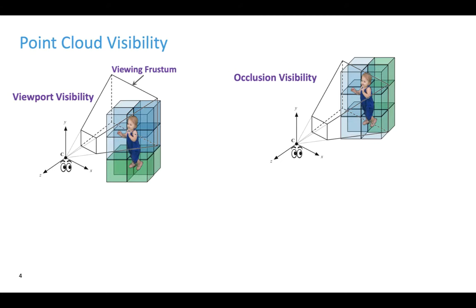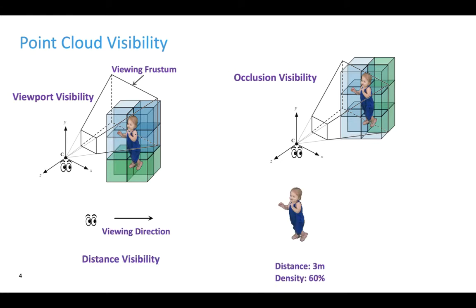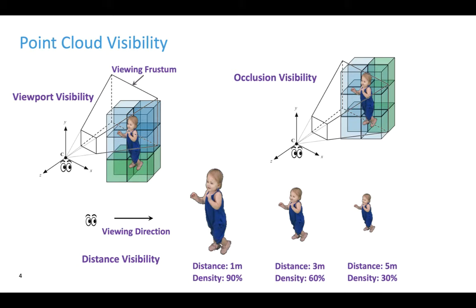Thus, we may not need to deliver the three green cells. The last one is called distance visibility. Suppose the distance between the viewer and the content is 3 meters — sending a point cloud with 60% of points may already be enough for achieving a satisfactory visual quality. If the distance becomes shorter, we should send more points to ensure good visual quality. We can send fewer points when the distance is longer, because the size of displayed content depends on the viewing distance. Occlusion visibility and distance visibility are unique to volumetric videos by exploiting depth information in 3D data.